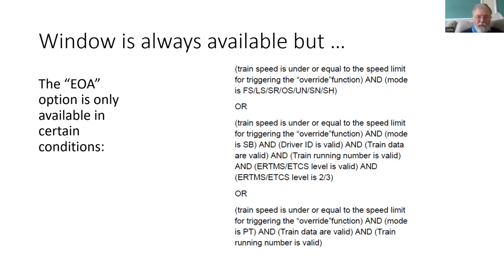Because other processes need to be followed before override is undertaken — normally through the written order process and communication with the signaller — the train would be at a standstill. But there may be circumstances where the driver is authorised to operate override at a low speed.